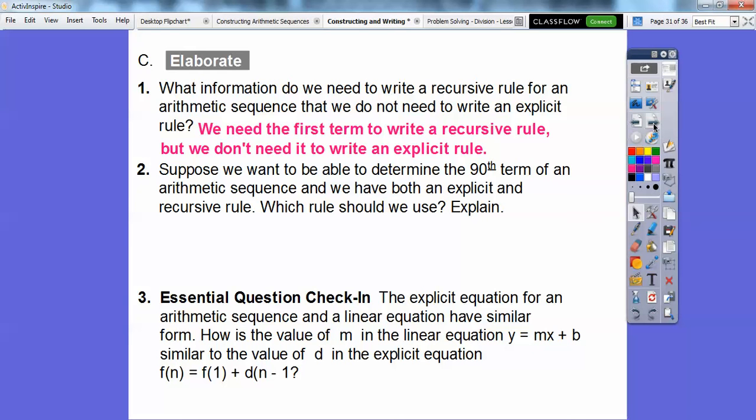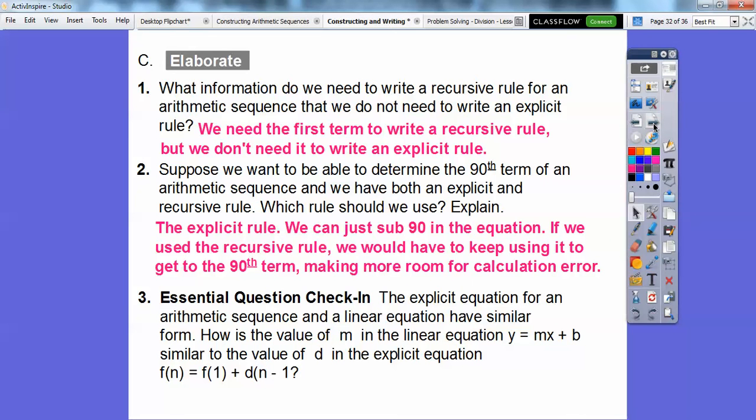Suppose we want to determine the 90th term of an arithmetic sequence and we have both an explicit and recursive rule. Which should we use? Definitely the explicit rule because it gives us that nice formula and we can just substitute in 90. If we use the recursive rule, we've got to start with the first term and do the second term, the third term, because every term depends on the term before that. So we have to go all the way out to the 90th term. There's a lot more room for calculation error. So definitely if you have an explicit rule, that's the formula to just plug in 90.